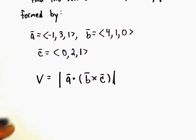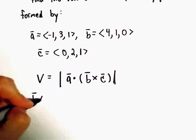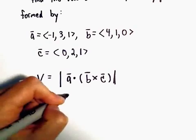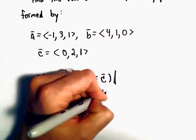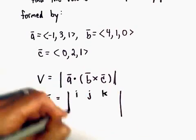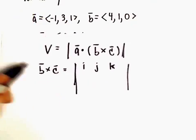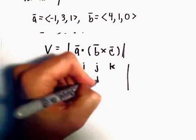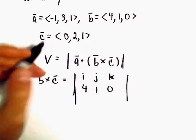So the first thing I'm going to do is compute B cross C. So i, j, k. B has components 4, 1, 0. C has components 0, 2, and 1.